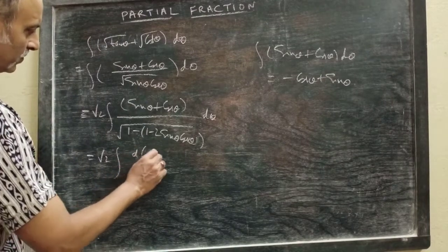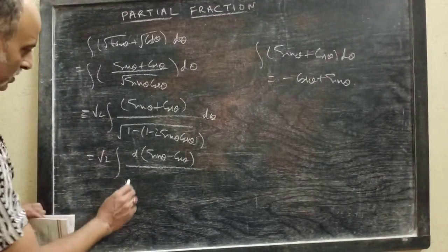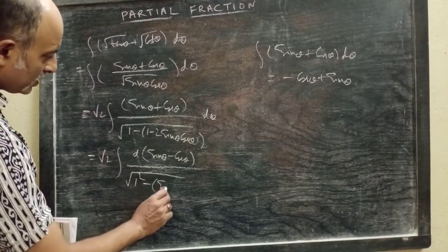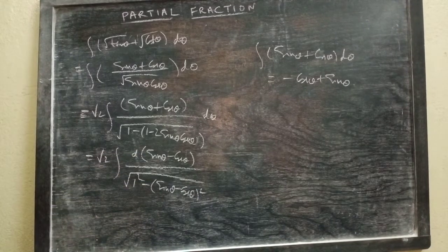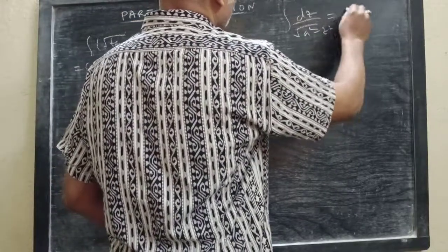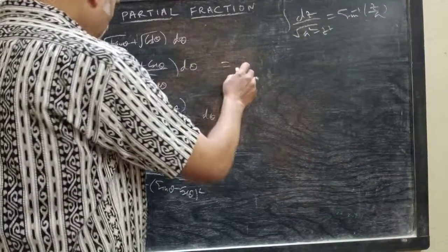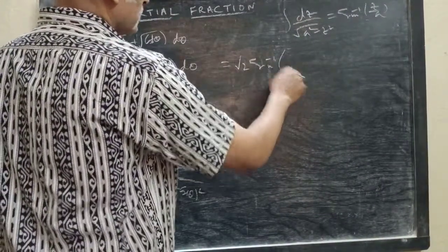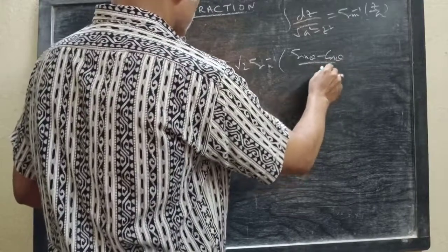This can be thought of as d(sin θ − cos θ), and here it appears 1² − (sin θ − cos θ)². So substituting z = sin θ − cos θ, this equals ∫ dz / √(1 − z²), whose formula is sin⁻¹(z/a). So here the result will be √2 · sin⁻¹(sin θ − cos θ), where a = 1, plus C. This is our answer.